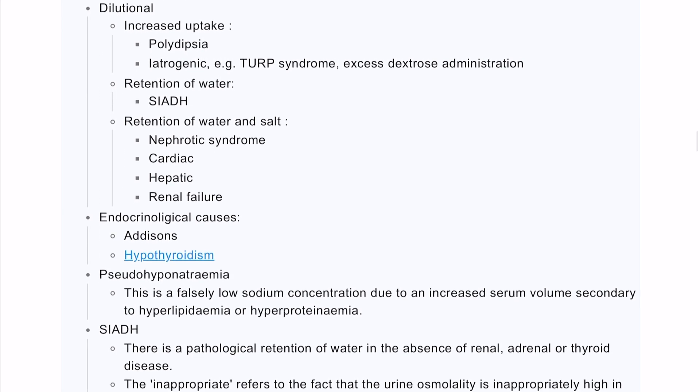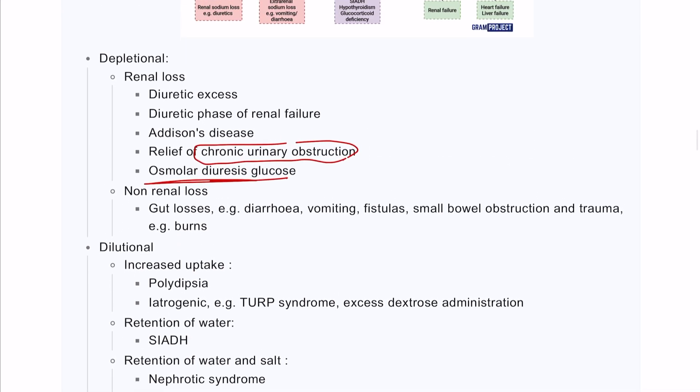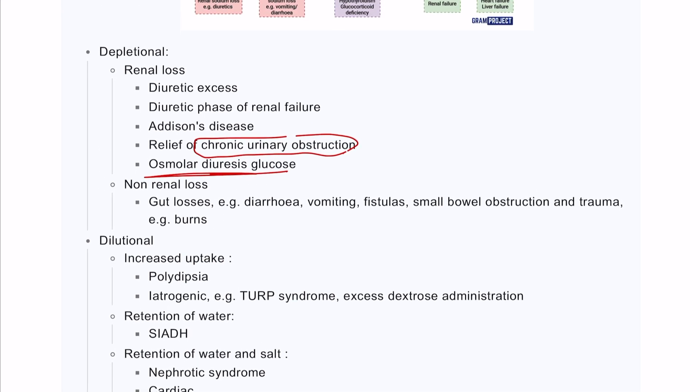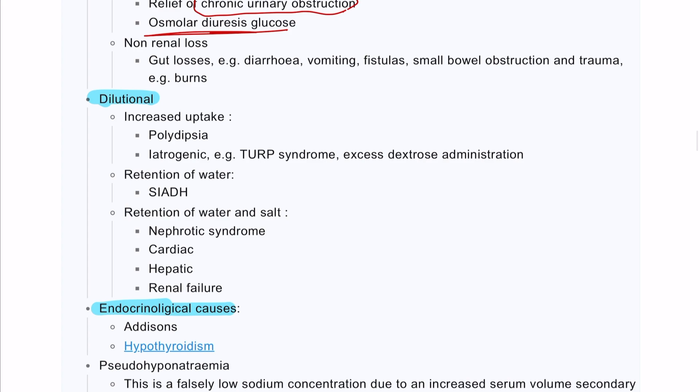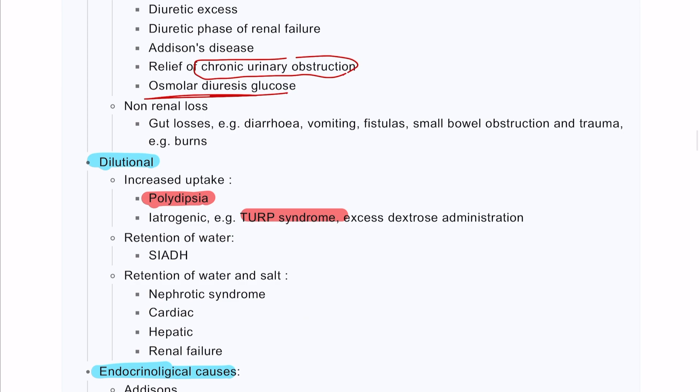These are the causes of hyponatremia: depletional hyponatremia, dilutional hyponatremia, and endocrinological causes. I didn't mention that in dilutional causes, polydipsia with increased water intake can lead to hyponatremia. TURP syndrome can also lead to this because the washout fluid used has less sodium and can get absorbed, leading to decreased sodium levels.